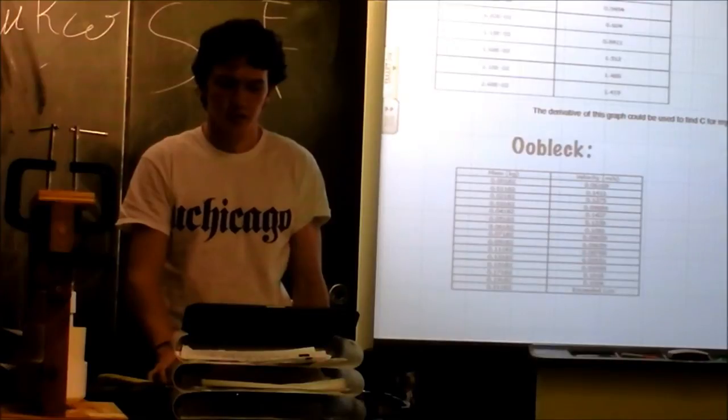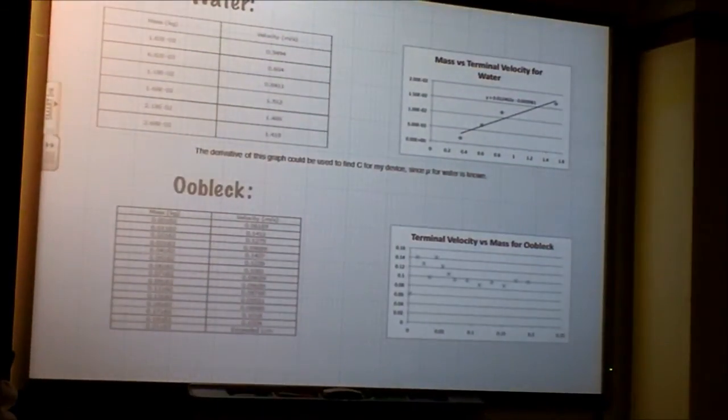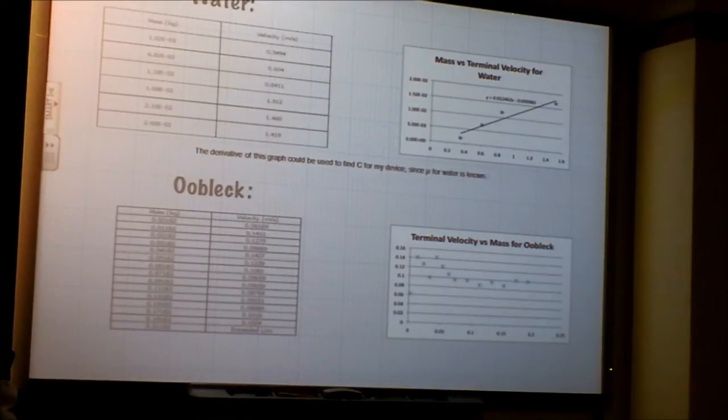So, this is an example of my data. That's how I got C for water, from the water. And then I used C later on. And I'll get to that. But that little, that graph right there was so frustrating when I got to it. Because I was like, there's no way that's linear. My data is terrible.